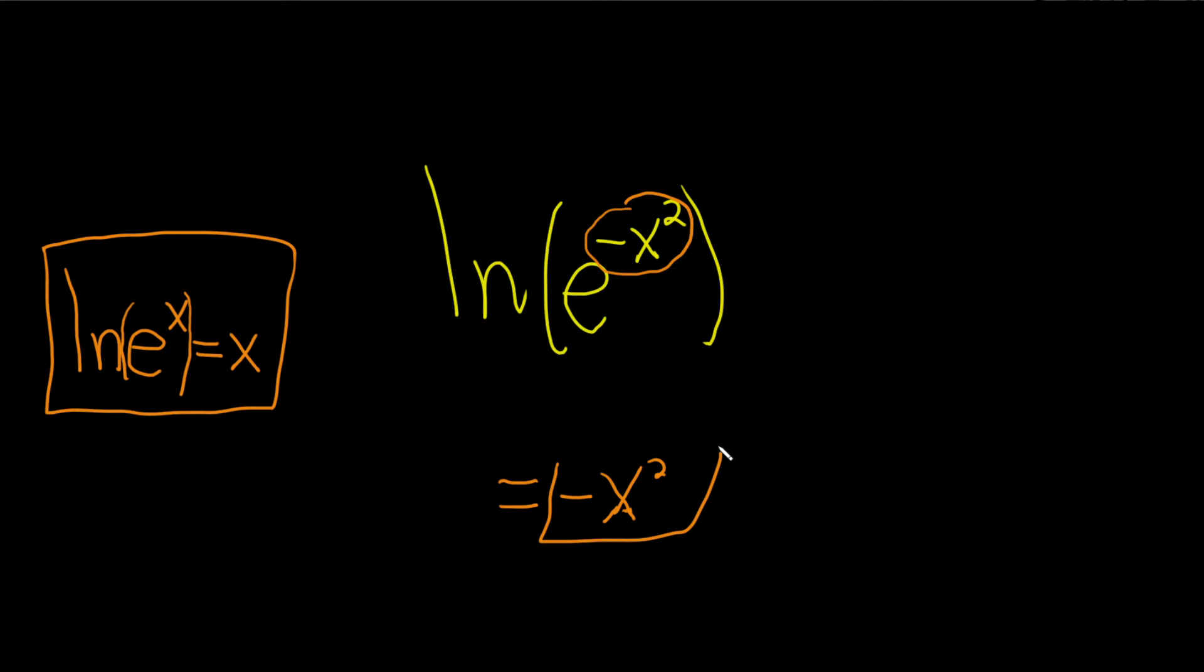And the reason this formula works, if you're curious, is because the natural log of x and e to the x are inverse functions. So basically we're composing them here and then we're getting x. So e does something to x and then ln undoes it and so you just get x. They cancel and you just end up with x.